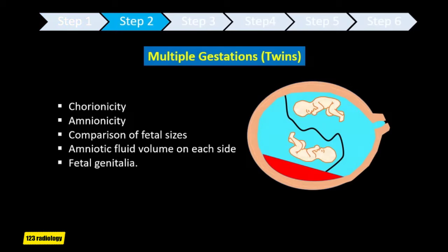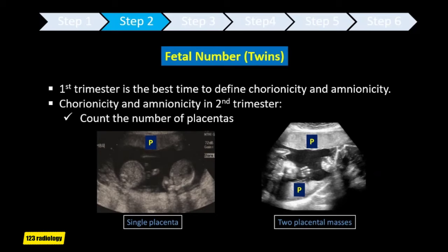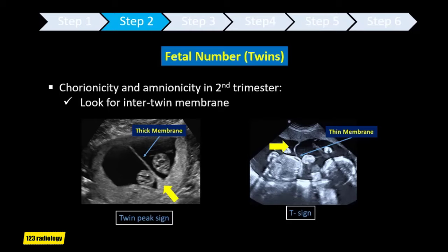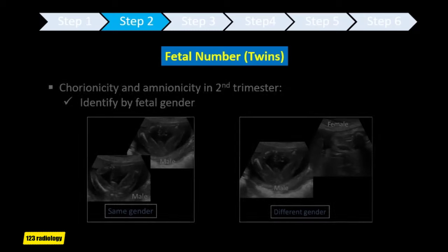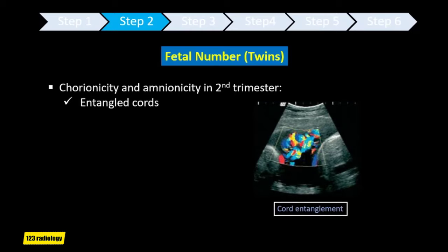Multiple gestations require documentation of additional information, such as chorionicity, amnionicity, comparison of fetal sizes, estimation of amniotic fluid volume on each side of the membrane, and fetal genitalia when visualized. The first trimester is the best timing to define chorionicity and amnionicity of twins. If not done before, you have to determine chorionicity and amnionicity in the second trimester. You count the number of placentas and look for the inter-twin membrane — if it is thick with twin peak sign, this is dichorionic; if it is thin with lambda sign, this is monochorionic diamniotic pregnancy. You can use the gender of the fetus to determine chorionicity. In monoamniotic twins, you may see entangled cords.